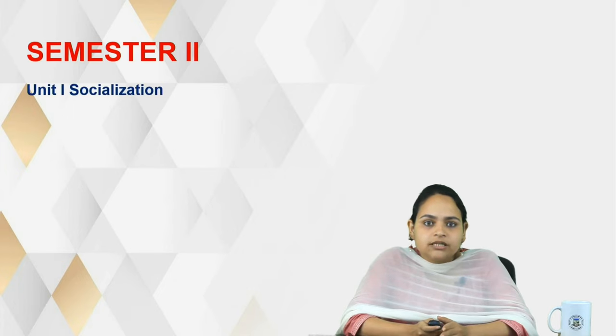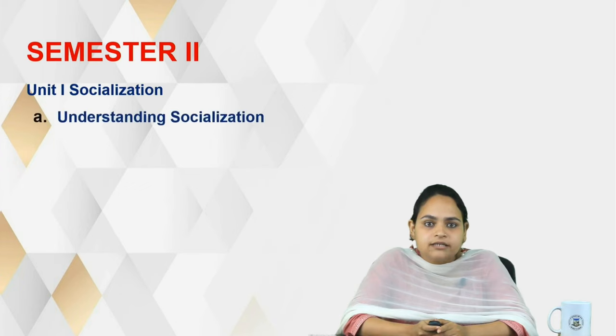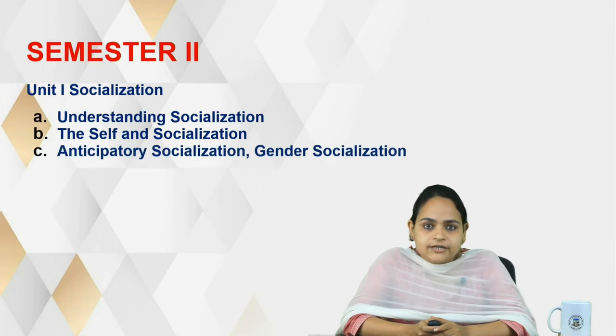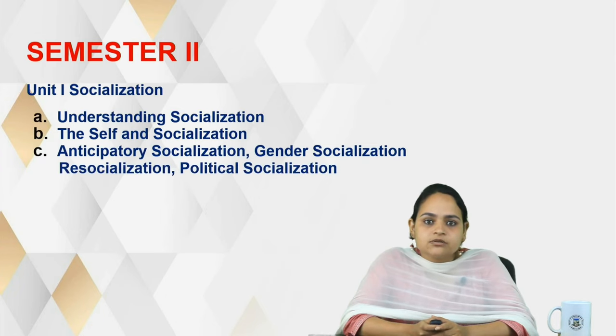Coming to semester 2, where the paper is titled Fundamentals of Sociology, we again have four units. Unit 1 is on Socialization, which includes understanding what socialization is, the relationship between self and socialization, concepts of anticipatory socialization, gender socialization, re-socialization, and political socialization.